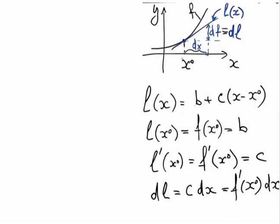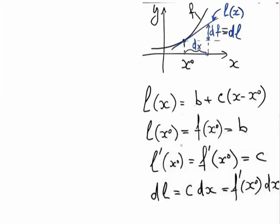I am staying at the point x₀ and I build a linear function with the general expression: some constant b plus some constant c multiplied by (x minus x₀). I want this linear function to have the same value at the point x₀ as my original function, so I can conclude that b should be equal to f(x₀). I also want it to have the same slope.